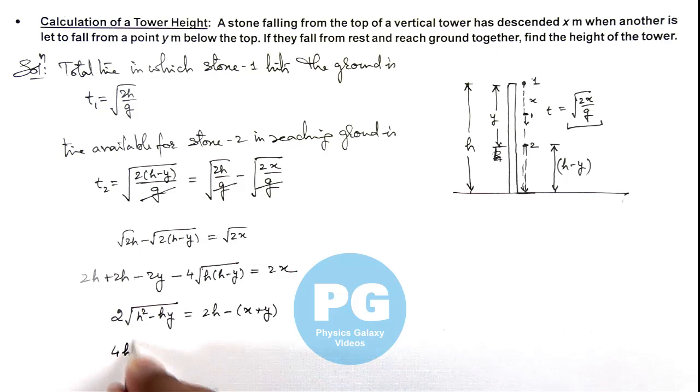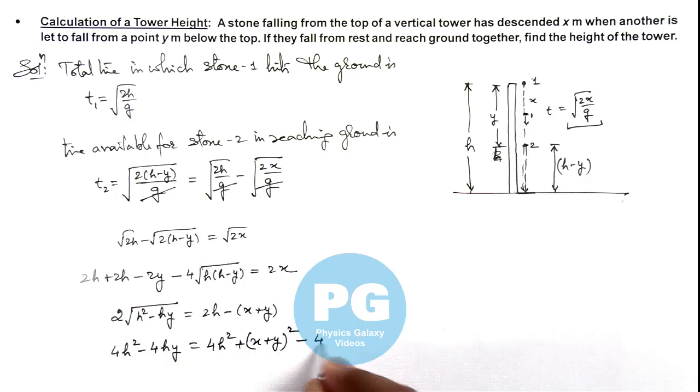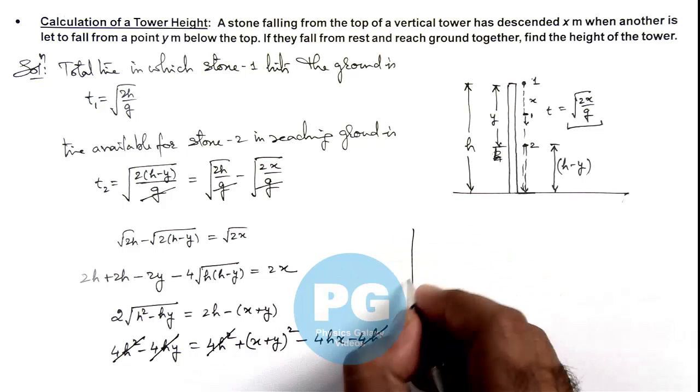This will give us 4h square minus 4hy is equal to 4h square plus x plus y whole square minus 4hx minus 4hy. Here 4h square and 4hy both gets cancelled out.